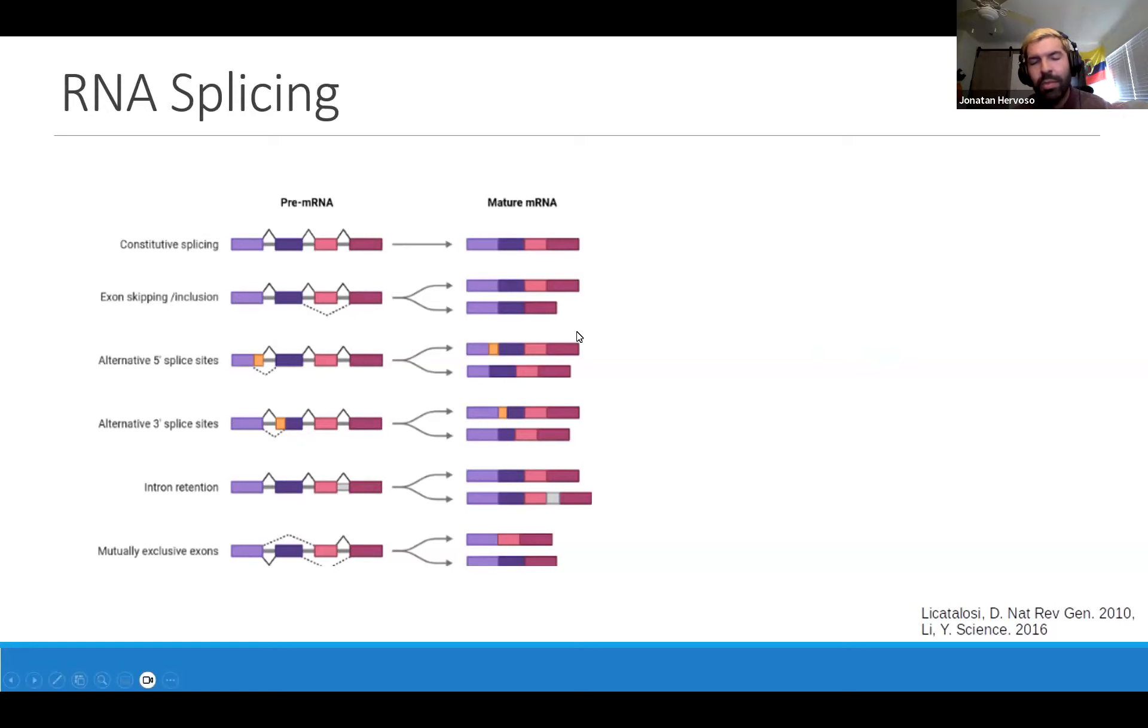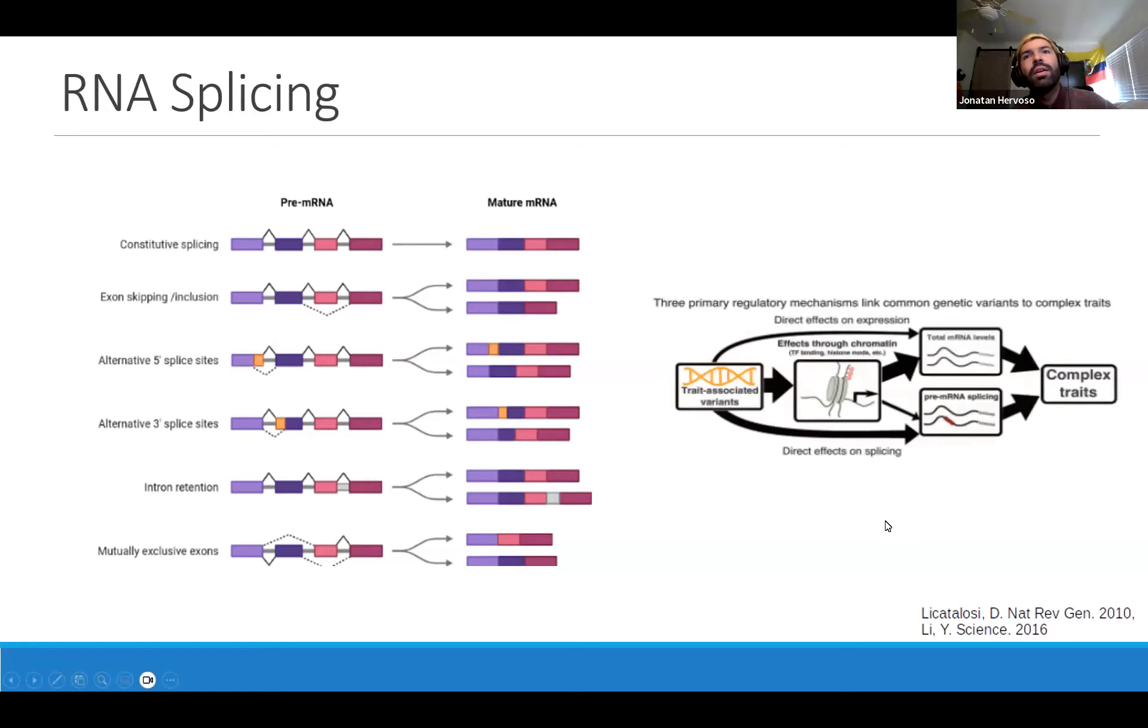All of this comes into play with genetic regulation because recent studies have found that genetic variants associated with traits actually have a really big effect on splicing directly without any intermediary molecular pathways, and from there, mRNA splicing has a big effect on complex traits.